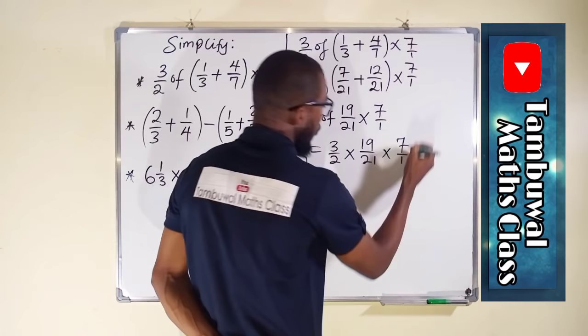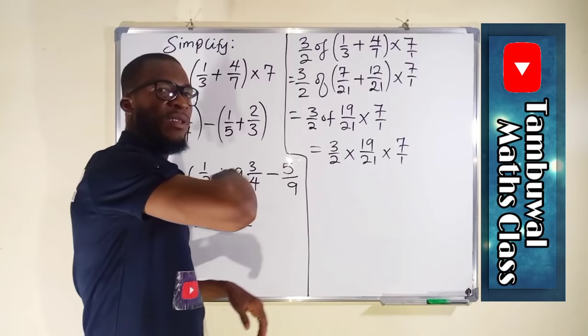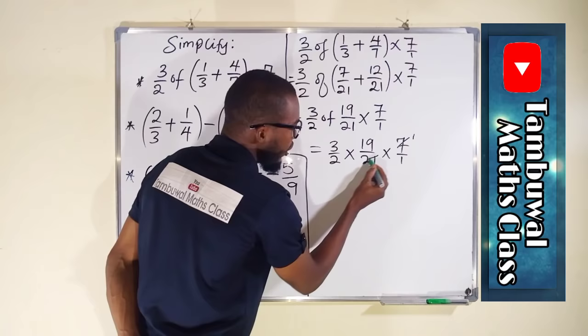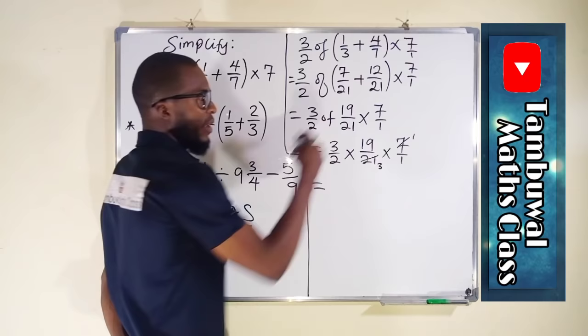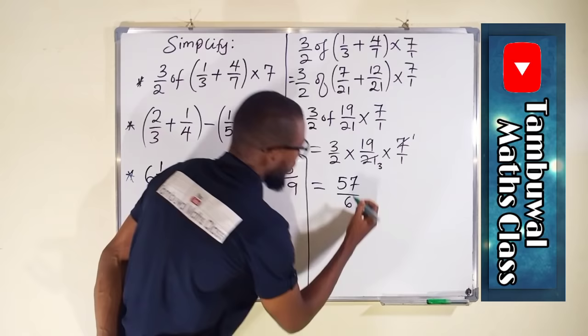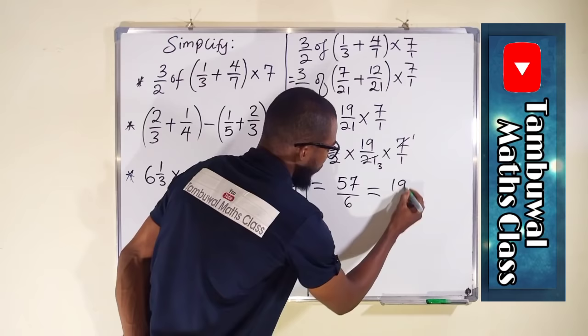This becomes 3 over 2 multiplied by 19 over 21 multiplied by 7 over 1. The remaining operations are all multiplication, so we can multiply numerators and denominators together. For convenience, let us reduce first: 7 can go into 7 one time, and 7 can go into 21 three times. So we have 3 times 19 times 1 in the numerator, which is 57, and 2 times 3 in the denominator, which is 6. Reducing: 57 divided by 3 is 19, and 6 divided by 3 is 2.